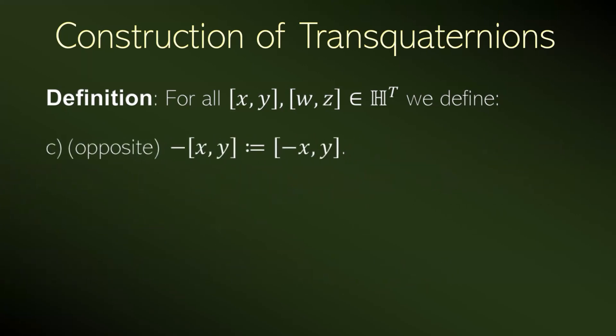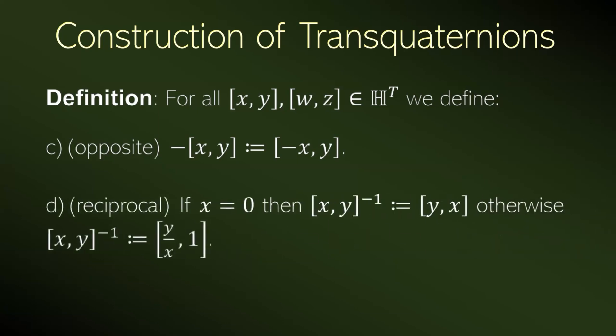The opposite of a class is the class whose first coordinate is the additive inverse of the first coordinate. The reciprocal — if the first coordinate is 0 — is the class exchanging the coordinates. Otherwise, the reciprocal is the class whose second coordinate is 1 and whose first coordinate is the second coordinate over the first one. Here, we don't have a problem with right or left division, because quaternions have the property that multiplication by a real number is the same on the right or on the left. So because y is 0 or 1, there is no ambiguity.